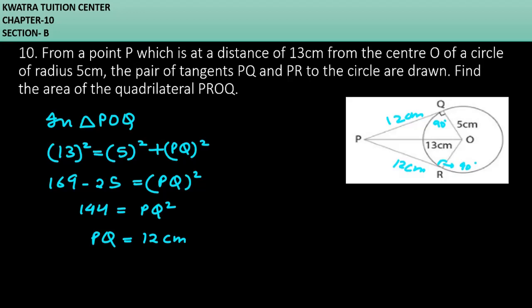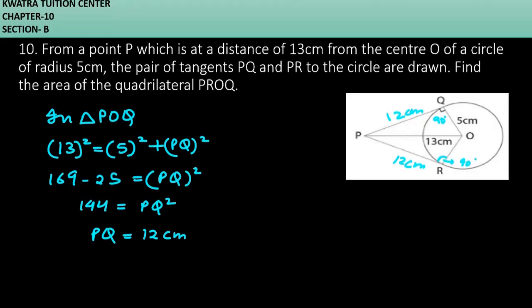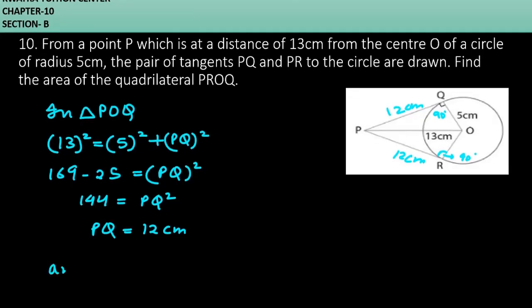Now, what we can do is we can find the area of one of the triangles and multiply it by two. Area of triangle PQO is equivalent to half base times height.